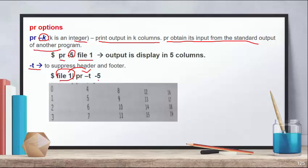For example, taking file one as input with PR command, you can use PR -T to suppress the header and footer, and you can also make the file output display in five columns. This is what the output looks like — the header and footer are suppressed.